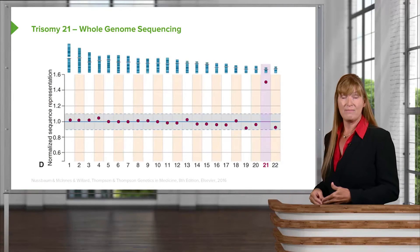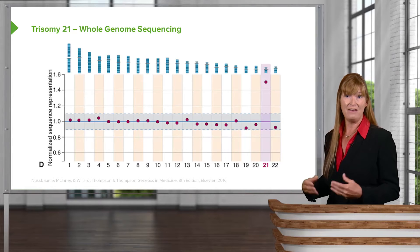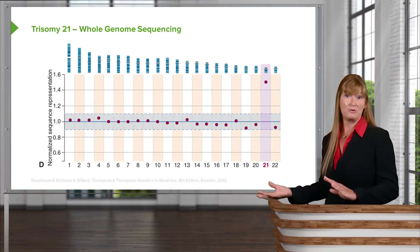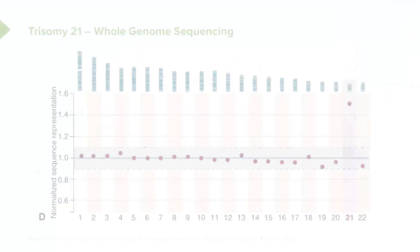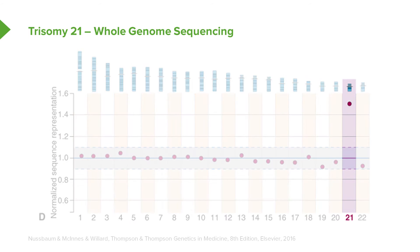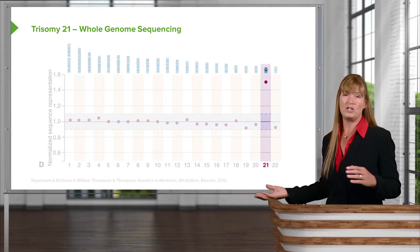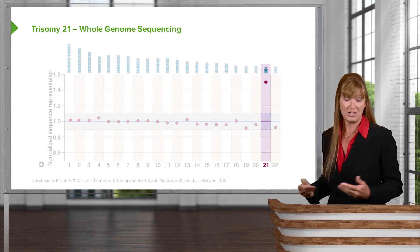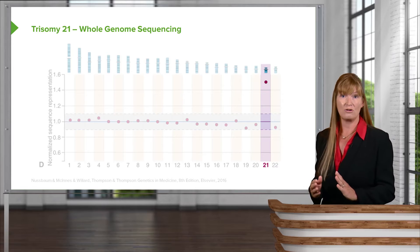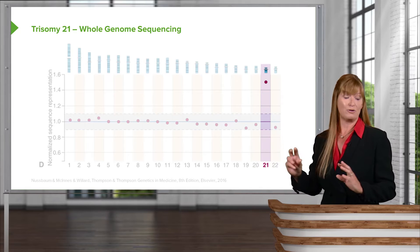Here is another approach using whole genome sequencing, again from amniocentesis, pre-implantation diagnosis, or chorionic villus sampling. We can see clearly in this normalized spectrum that chromosome 21 has more gene product than the rest of the chromosomes. In the gray area you see normal expression, and in this purple bar there is certainly a higher expression of chromosome 21. So those are three techniques we could use to diagnose not just trisomy 21 but any chromosomal disorder, whether full or partial polyploidies.